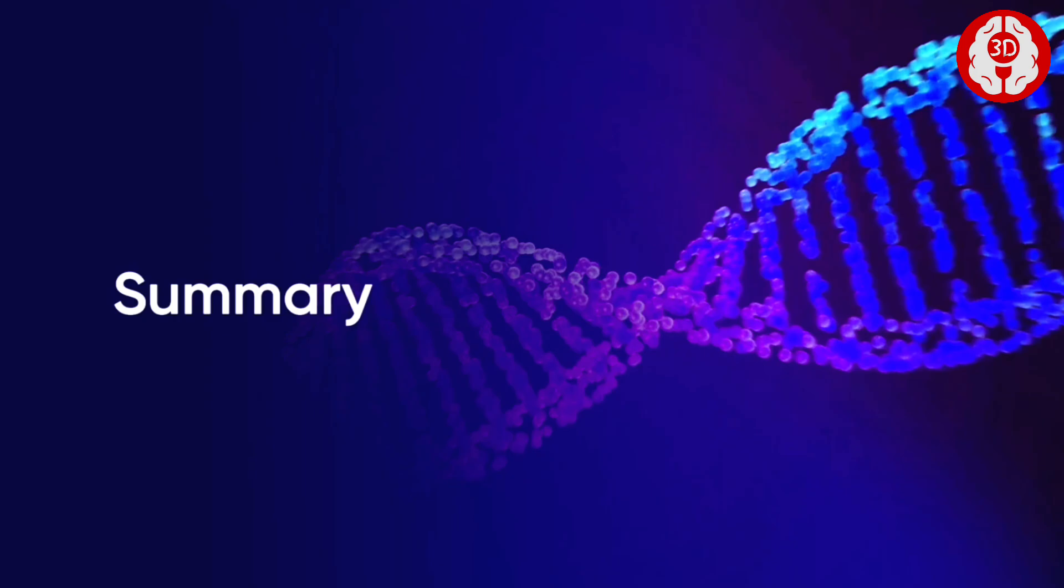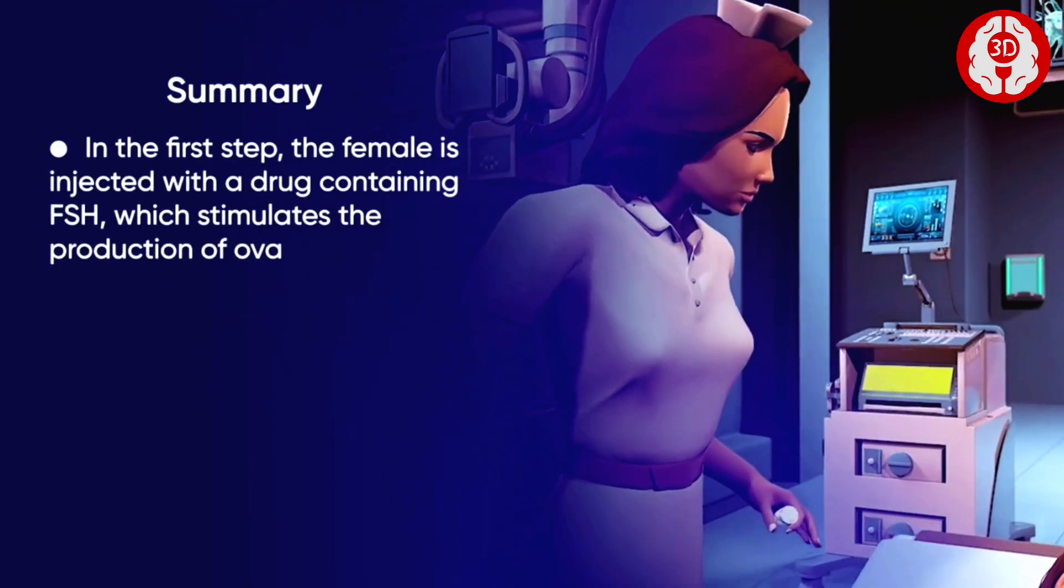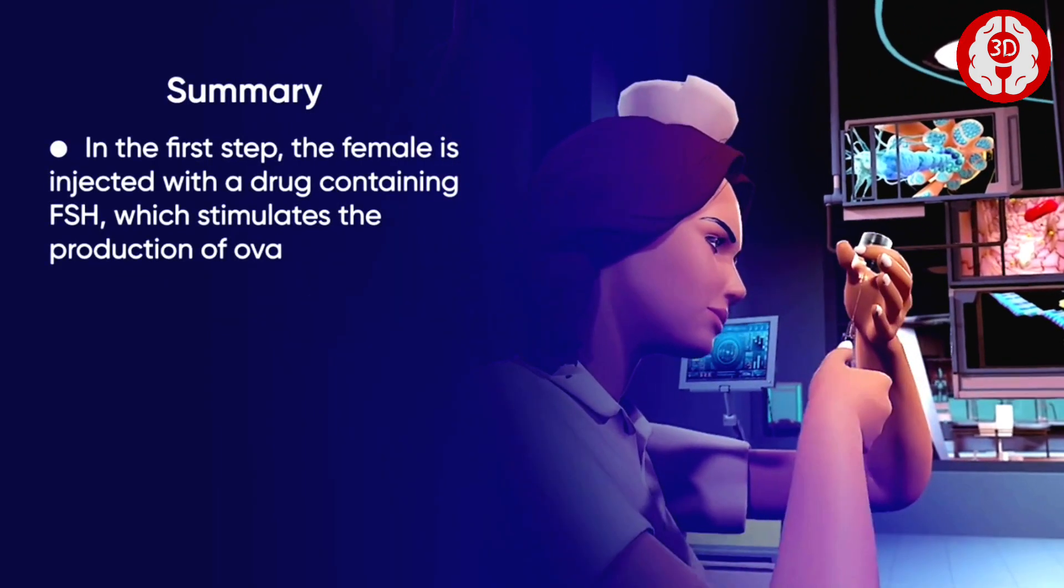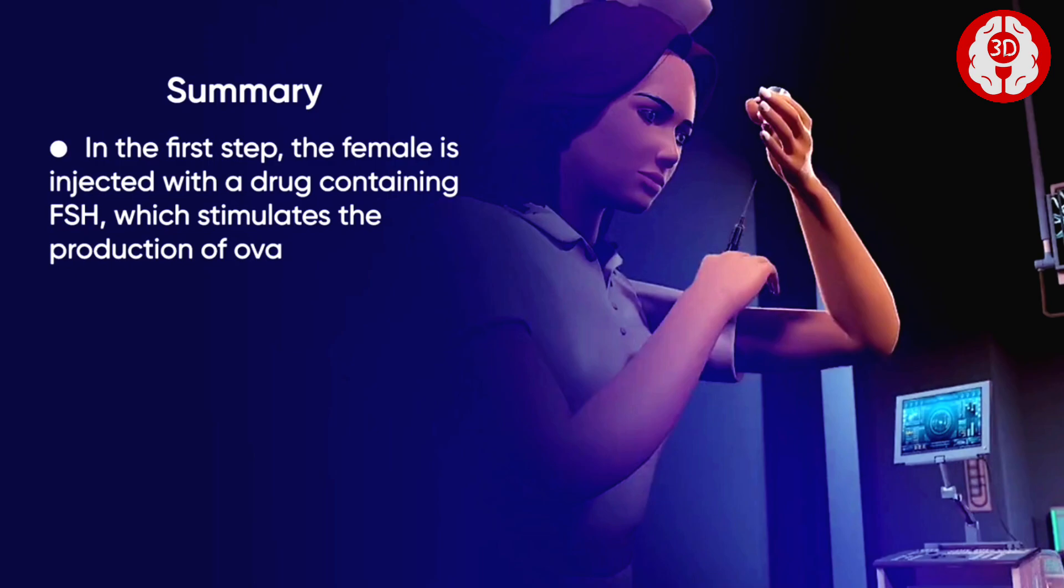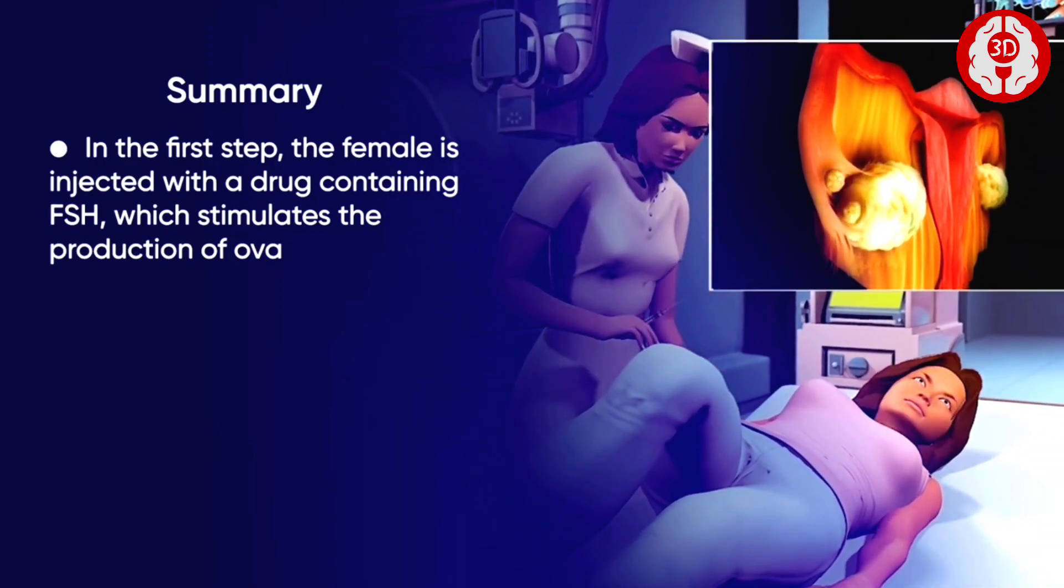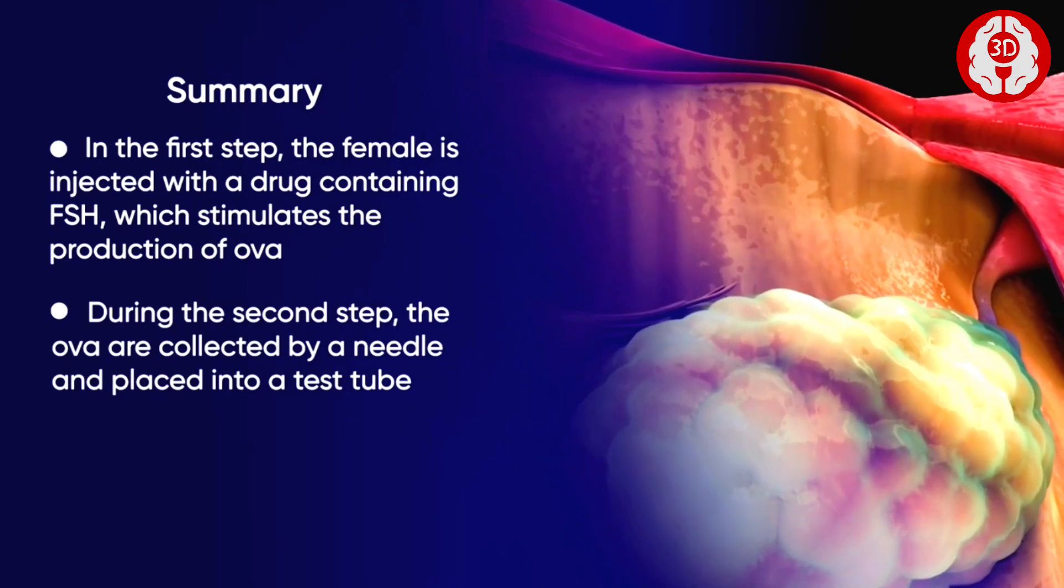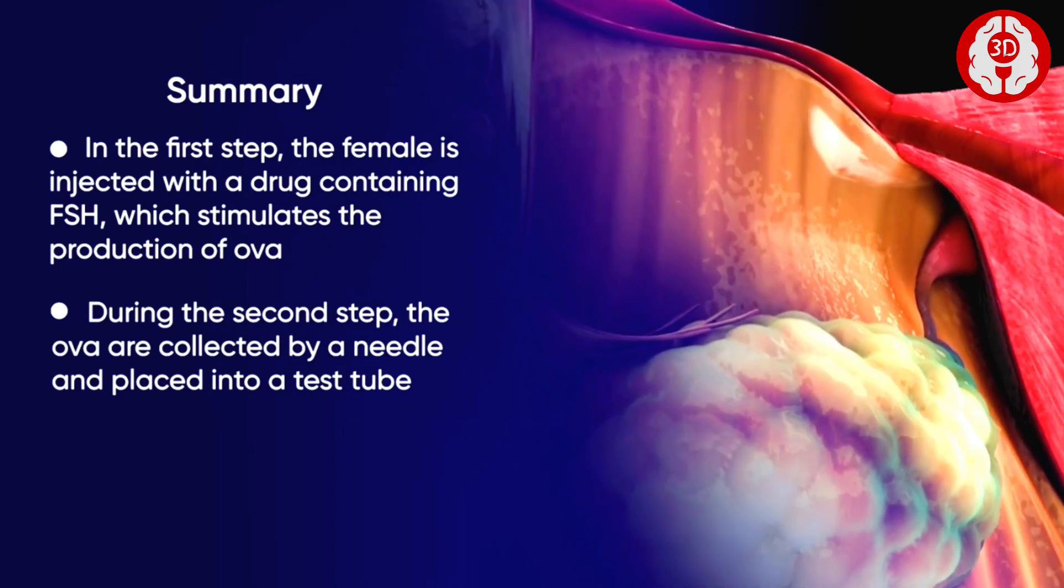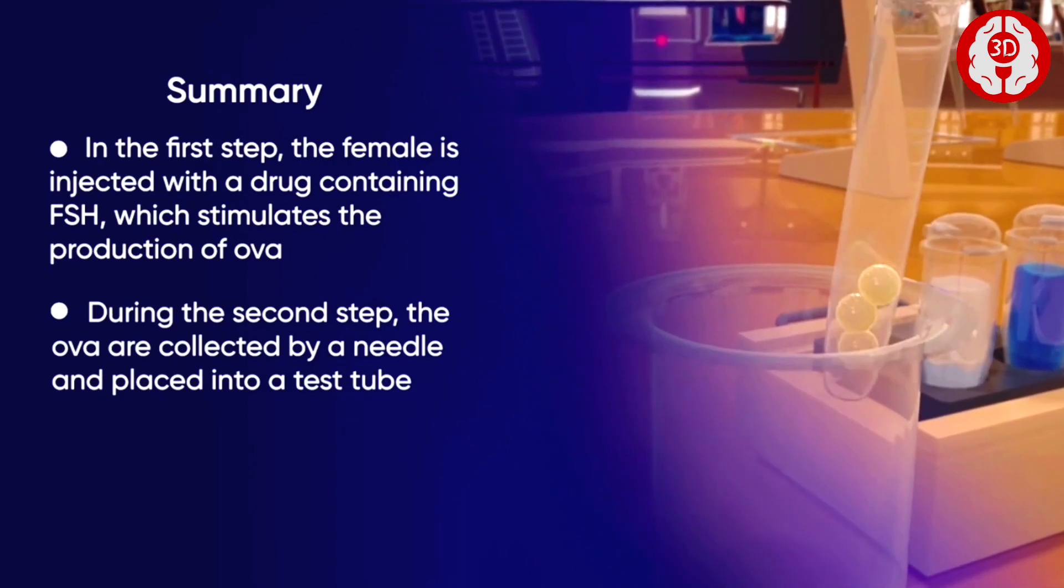To summarize, in this first step, the female is injected with a drug containing FSH, which stimulates the production of ova. During the second step, the ova are collected by a needle and placed into a test tube.